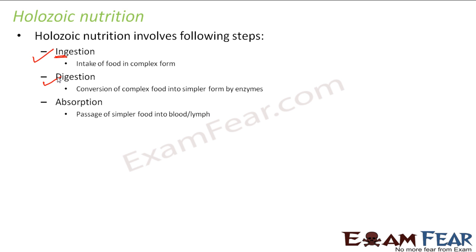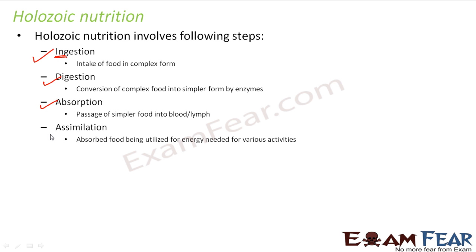Next is absorption – the passage of simpler food into blood or lymph. Once the food is converted into a simpler form, it can be absorbed by the cells. Blood is present everywhere in the body, so the simple food gets absorbed throughout. Assimilation is the absorbed food being utilized for energy needed for various activities. Once food is digested into a simple form and absorbed, it needs to be utilized for energy. The passage of absorbed food into the blood or lymph so it reaches each organ for further use is known as assimilation.